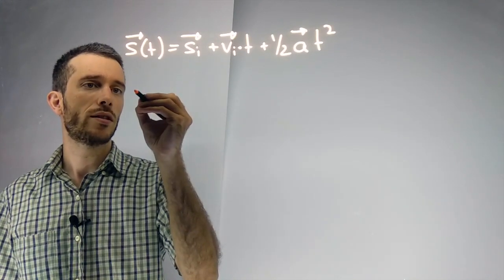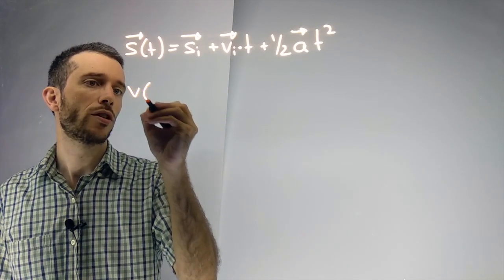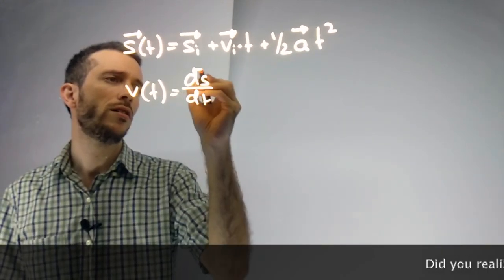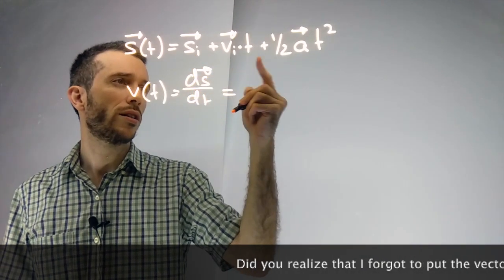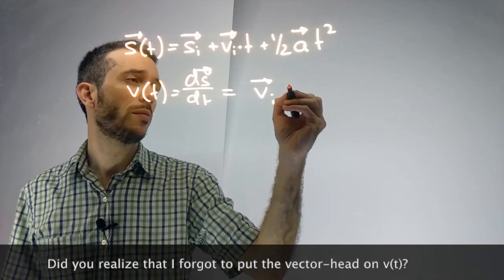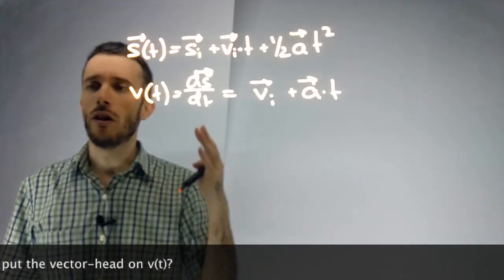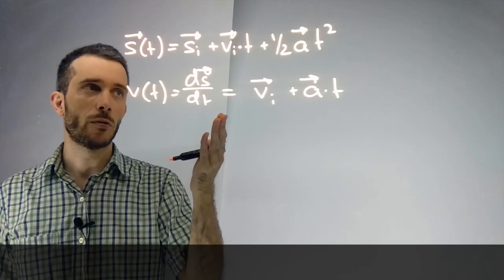We know that the velocity as a function of time is the derivative of the position. So v as a function of time is ds over dt. If I derive this, my initial position falls out, and I have the initial velocity plus 2 times one-half, which is the acceleration times time. Then all the other equations are just combinations or variants of this one.